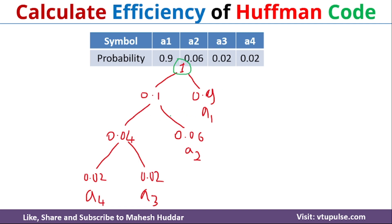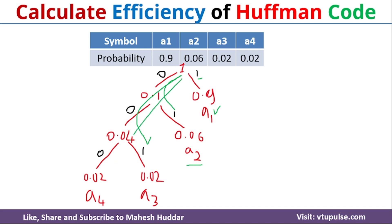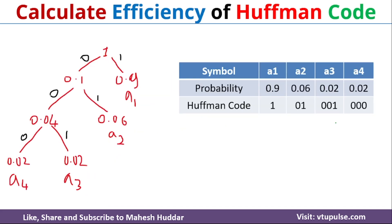Once you form this particular tree, next what we need to do is for each of the left branches we write 0, and for each of the right branches we write 1. That is what I have done here. Now once you write 0 and 1 for the left and right branches, we can easily write the Huffman code for each symbol. For A1, we travel the path containing value 1, so the Huffman code for A1 is 1. To reach A2, we follow the path 0 and 1. To reach A3, we follow 0, 0, 1. To reach A4, we follow 0, 0, 0. That is what I have written in this particular table.